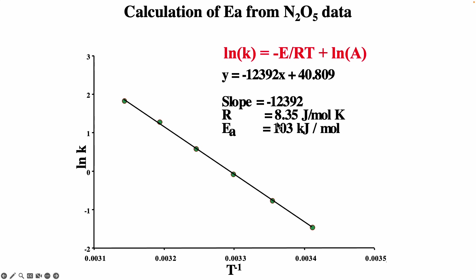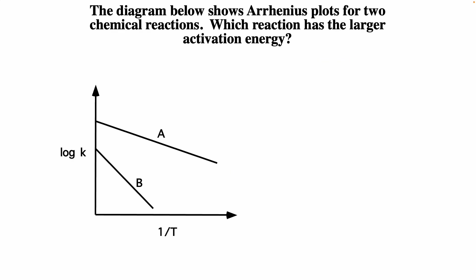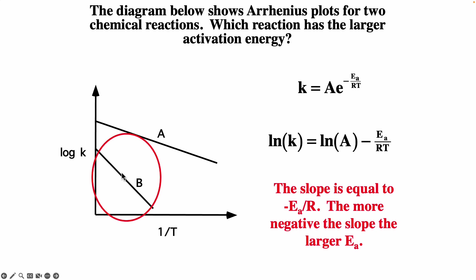The slope is equal to −12,392 in this case. R is 8.314 joules per mole kelvin. So we can actually get activation energy as 103 kilojoules per mole. The diagram below shows the Arrhenius plots for two chemical reactions — that is, log of k versus 1/T. The reaction with the more negative slope should have the larger activation energy.